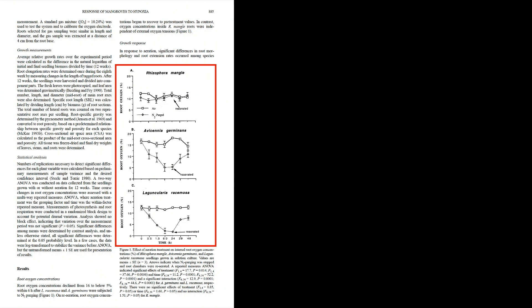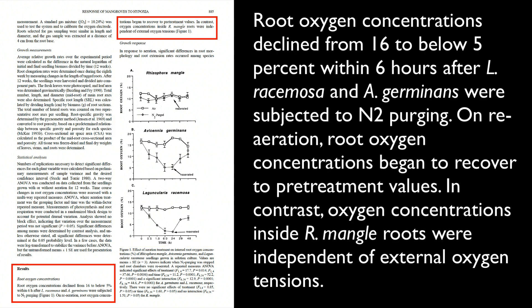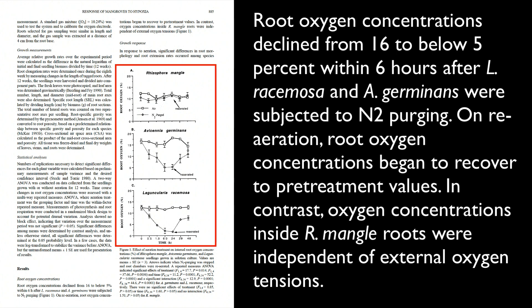Here's another example from a published paper showing how to concisely summarize patterns shown in graphs. The text summarizes the effect of aeration treatment on internal root oxygen concentrations in three species. Root oxygen concentrations declined from 16 to below 5 percent within six hours after L. rosimosa and A. germinans were subjected to N2 purging. On re-aeration, root oxygen concentrations began to recover to pre-treatment values. In contrast, oxygen concentrations inside R. mangle roots were independent of external oxygen tensions. The reader can look at the graphs to see precisely how root oxygen concentrations varied.